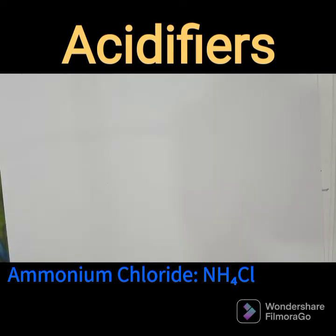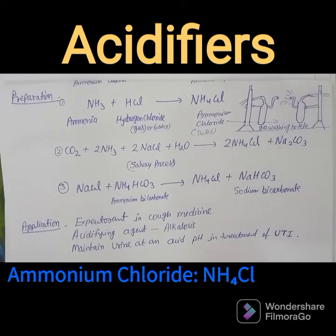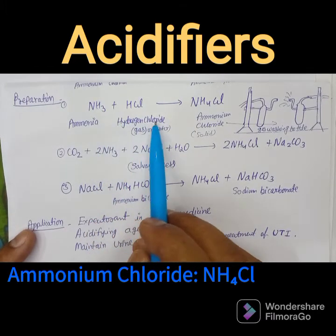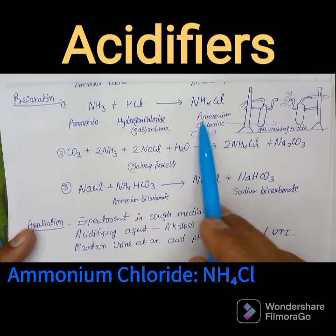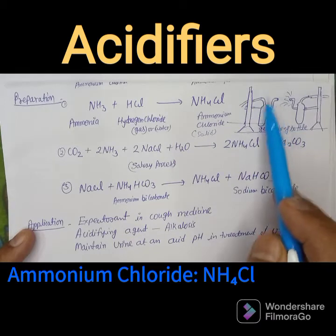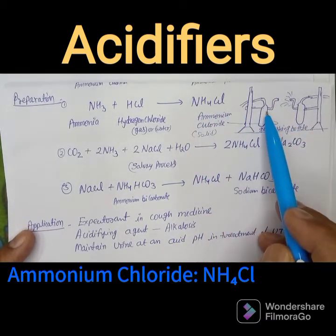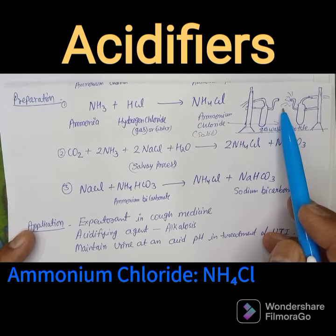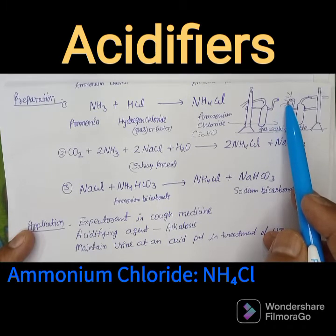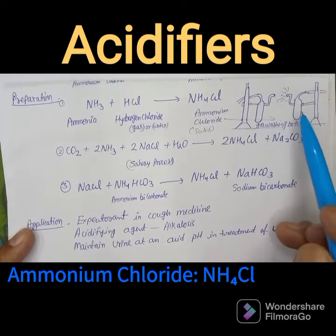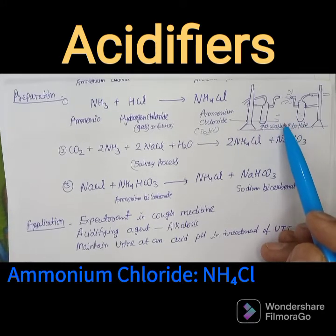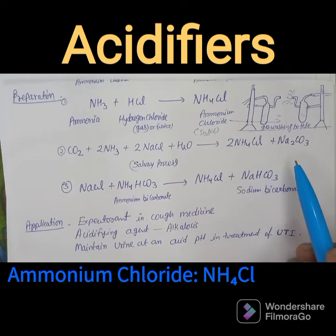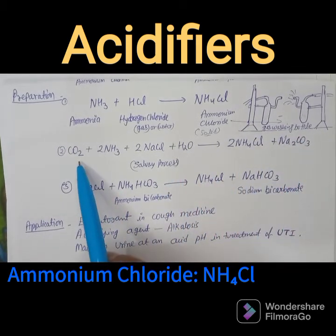For preparation of ammonium chloride, the first method involves reacting ammonia with hydrogen chloride in either gas or water form: NH₃ + HCl → NH₄Cl (solid). In the laboratory setup, a gas washing bottle is used containing ammonia and hydrogen chloride. After condensation, solid ammonium chloride accumulates.